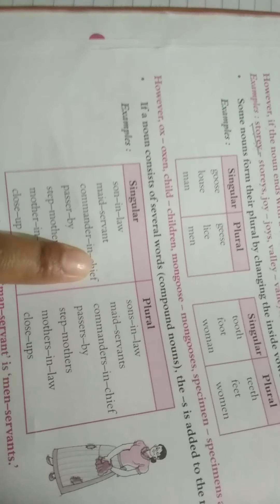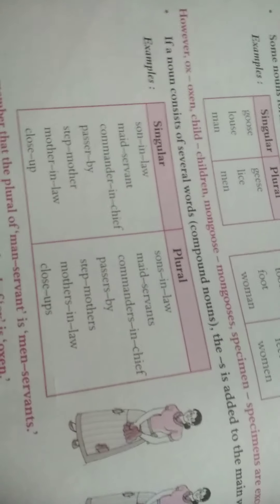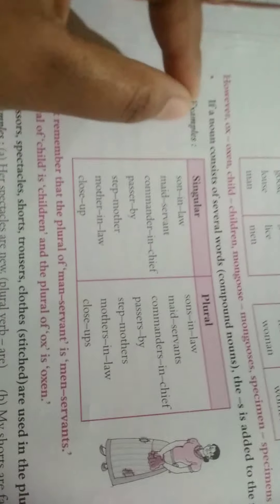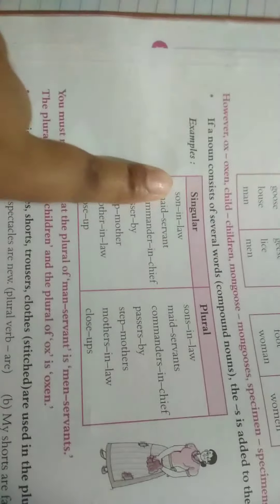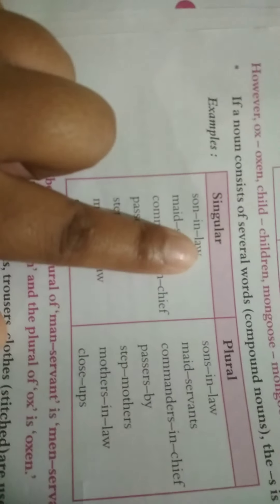So, here, when there is a compound noun, how do you convert those compound nouns into plural? See, by adding S to the main word. You don't have to add S in all the compound words, but you have to add S in the main word only. See, for example, son-in-law. So, this son is the main word. So, sons in law.